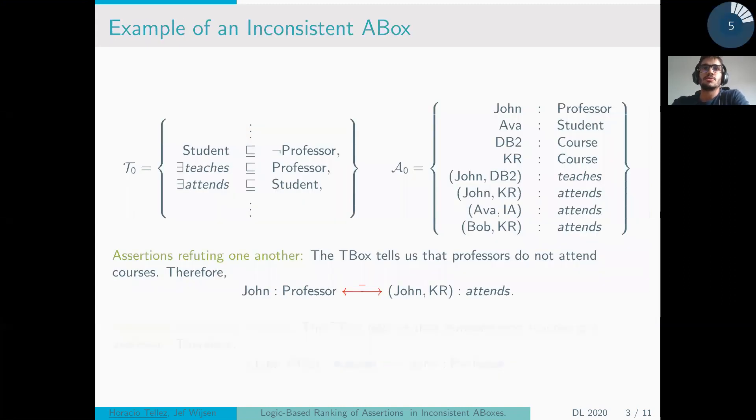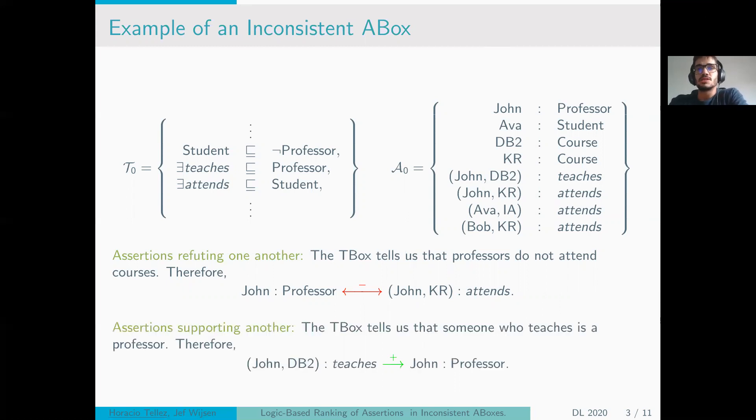In this example of a really simple knowledge base of a university, we can already see that there is a problem. John is a professor and also John attends the knowledge representation course. Following the T-box, this is an inconsistency, and then our A-box assessment should reflect that. Each assertion should hinder the score of the other. In the same way, John teaches the database course should reinforce our credibility of the fact that John is a professor.